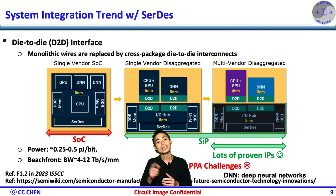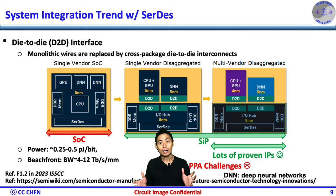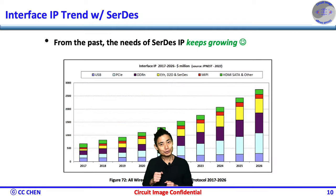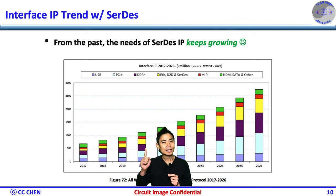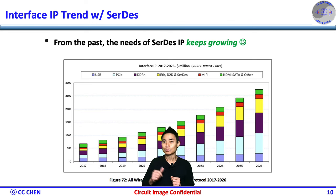If we know the die-to-die serdes would help the IP business, we will look at how the interface IP trend is evolving. From this trend in the past, we know the need for serdes IP keeps growing and would be almost a $2.5 billion market by 2025.